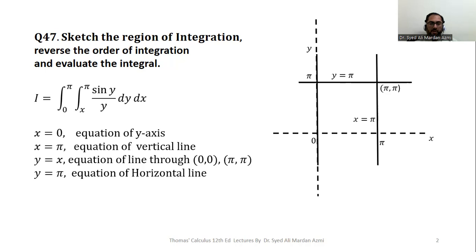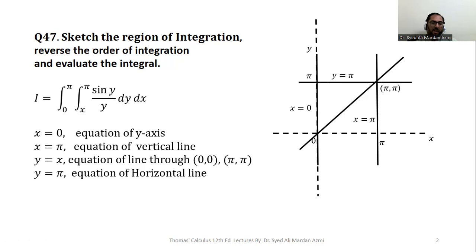I indicated the point (π, π) because I need to plot the line y = x, which passes through (0, 0) and (π, π). I draw the line extending from the origin to π. To plot a straight line other than horizontal or vertical you need only two ordered pairs. After plotting all four boundaries I label them: x = 0 is the y-axis, y = x is this line.